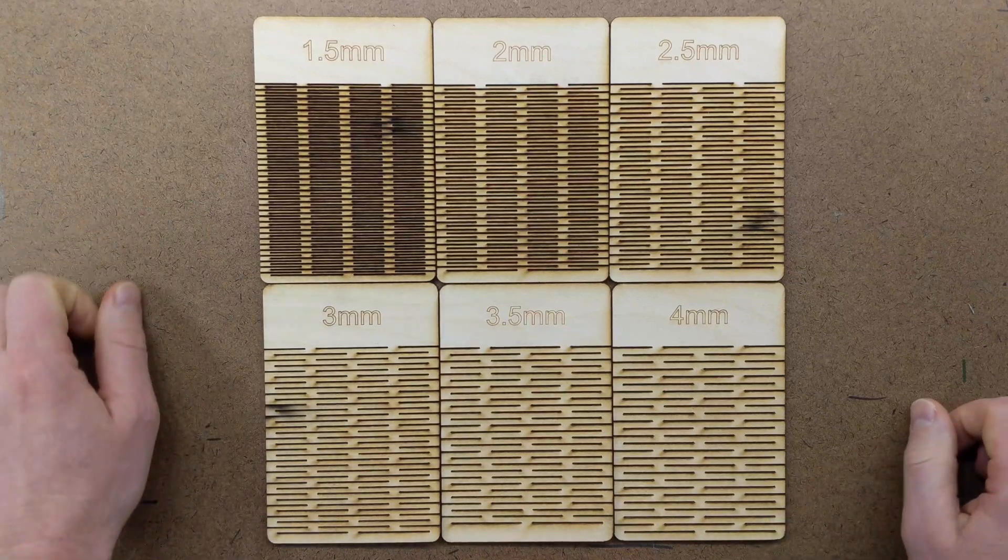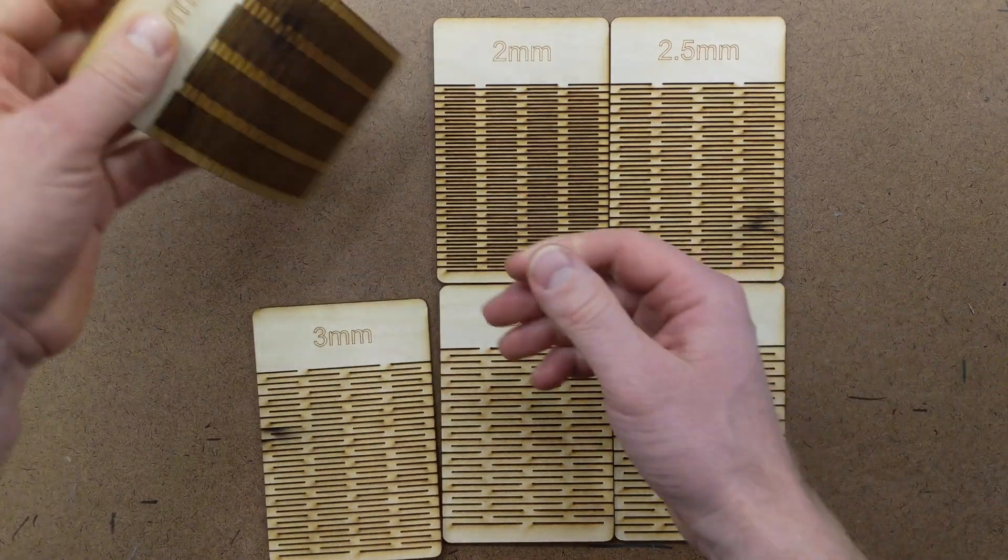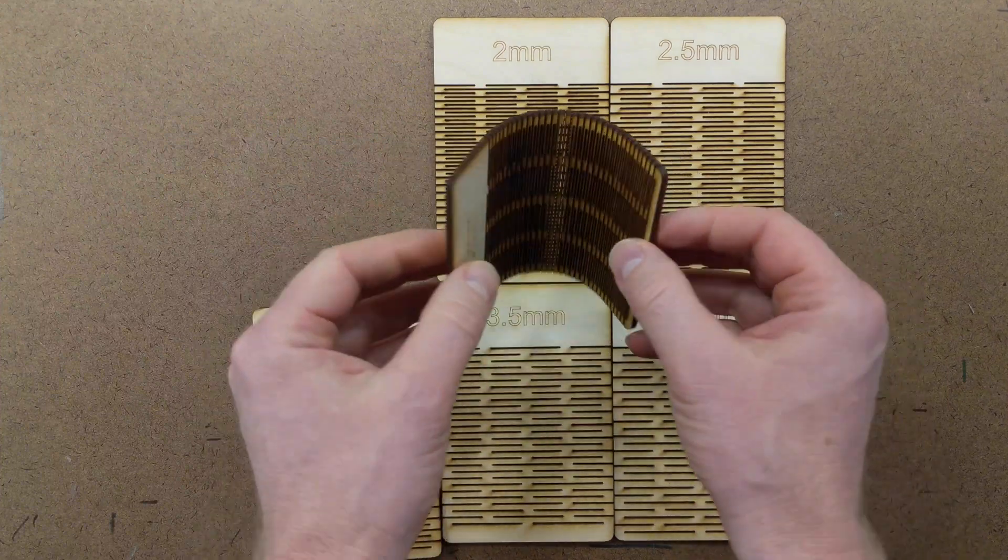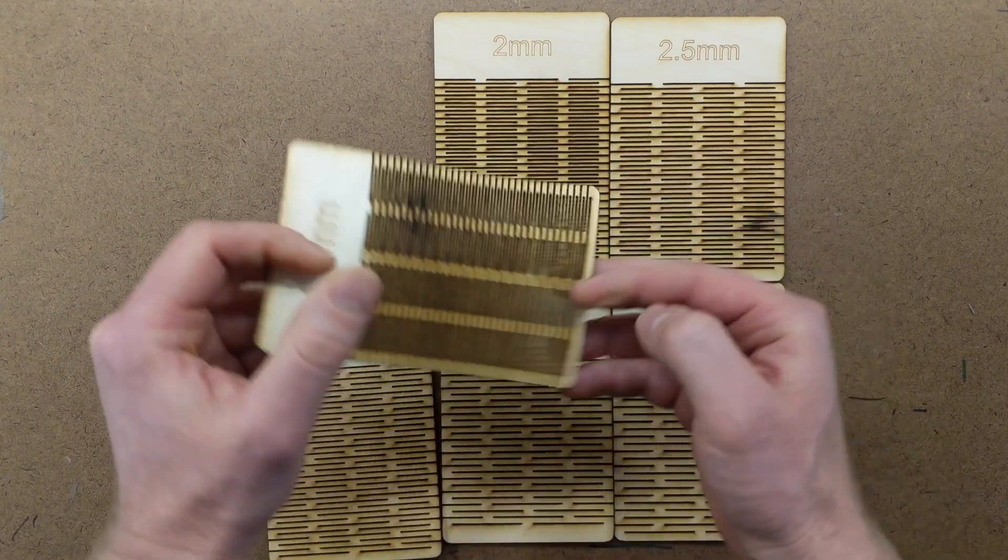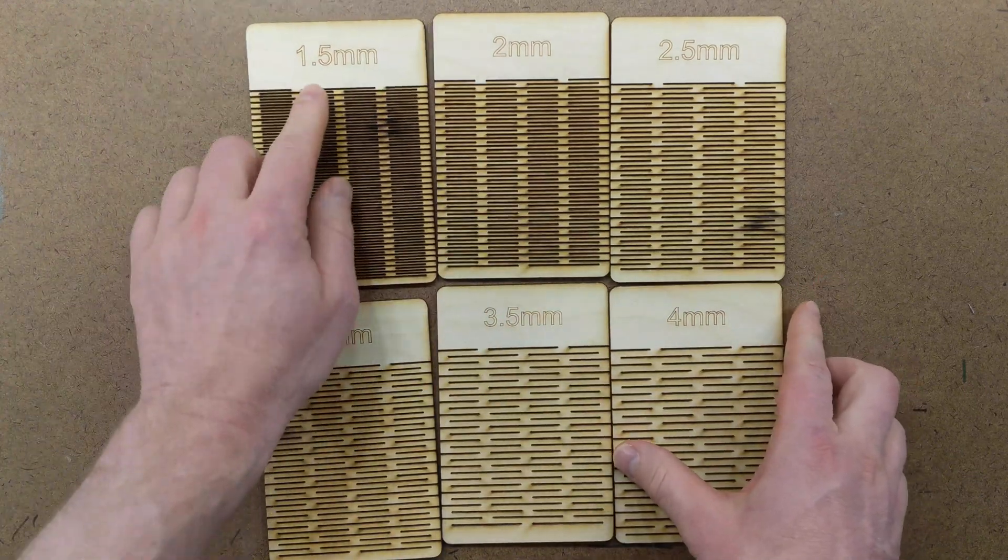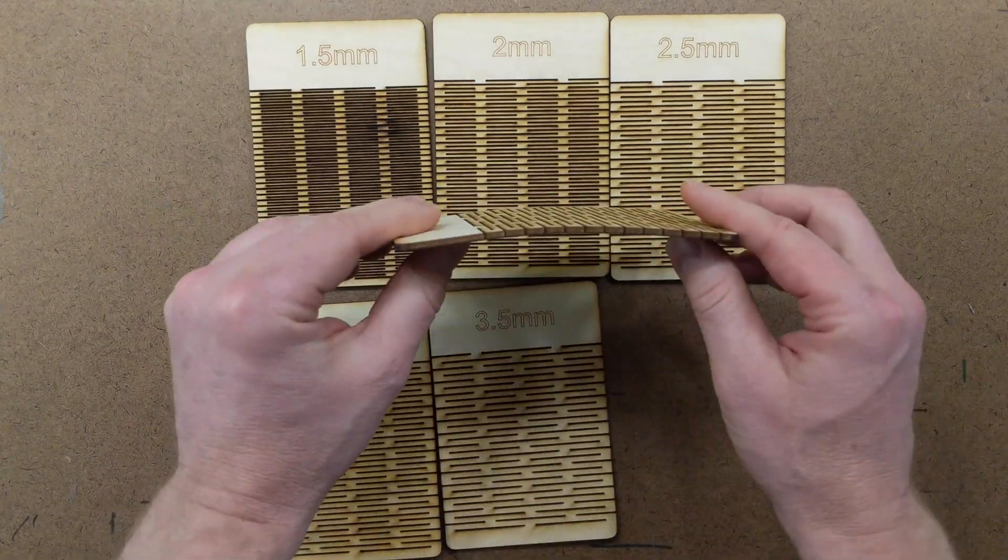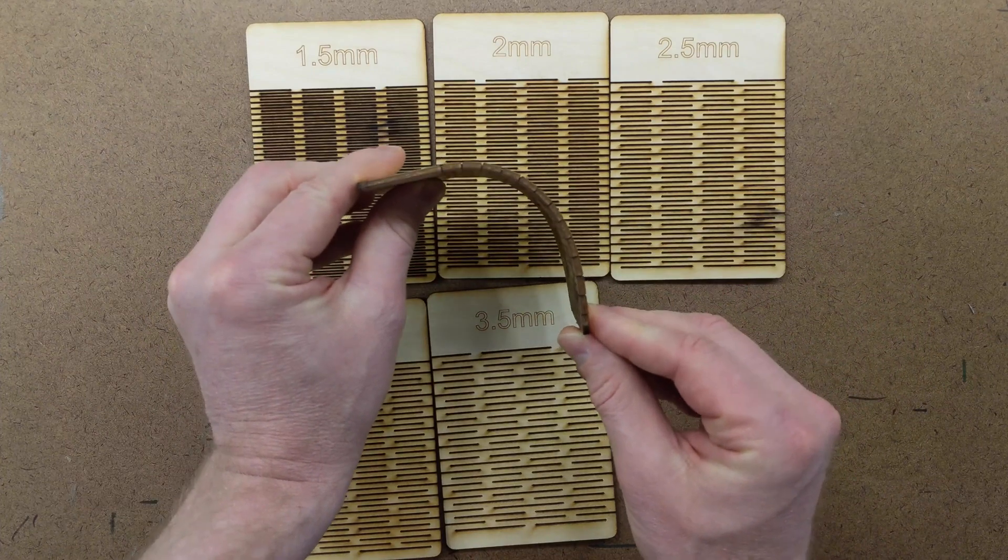Living hinges are a great way to bend plywood with a laser cutter. For example, this 1.5 millimeter cut is very bendy and flexible and can fit around tight radiuses. But if I move up to 4 millimeters, I still bend, but it's not as flexible as other cut patterns.